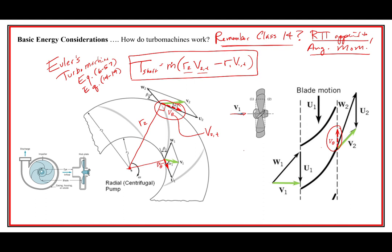A key thing we need to focus on to find these velocities is velocity triangles - they're turbomachinery's best friend and a necessary part of working with any turbomachine. You have to deal with velocity triangles because this thing is moving, so it has a velocity due to rotation - the angular velocity times the radius. There's also a relative velocity, which is the velocity that the blade sees.